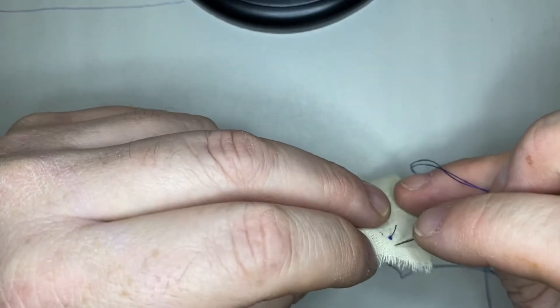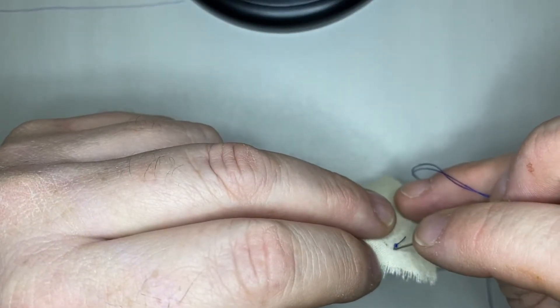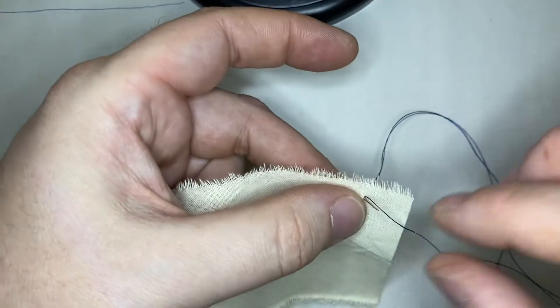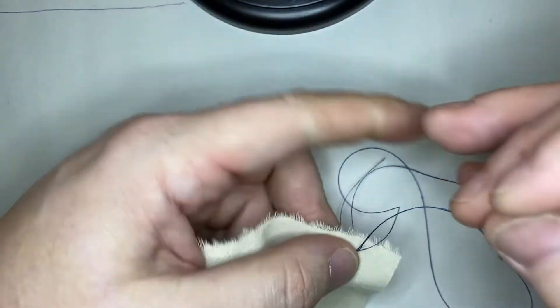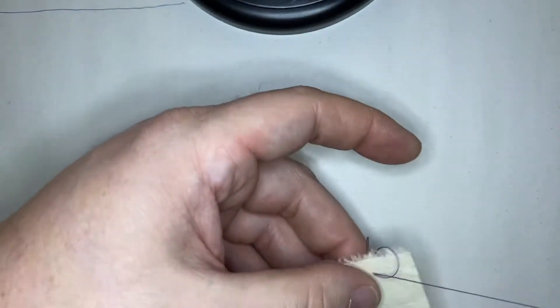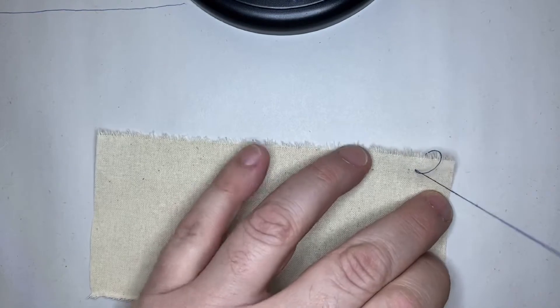Then I want you to go right through, right next to that knot, right in the same place. So you come through the back twice. Once to get your knot to the fabric, the second time to go through right in the same place as the knot.